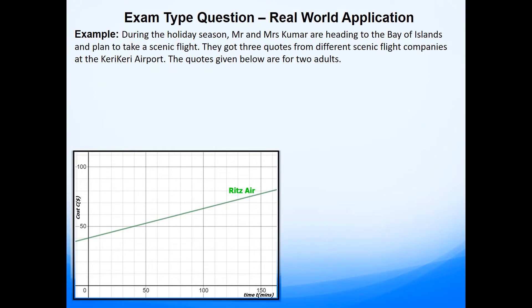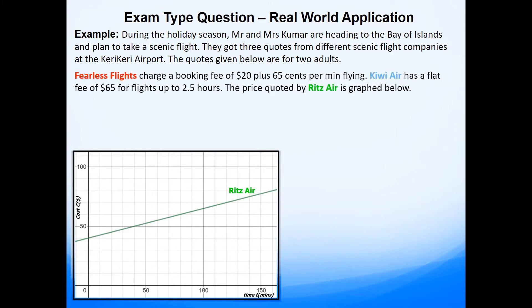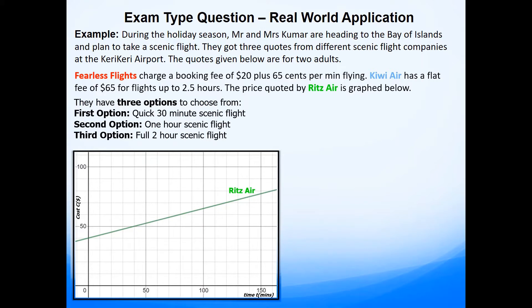So here's the problem that we have been looking at. During the holiday season Mr and Mrs Kumar are heading to the Bay of Islands and plan to take a scenic flight. They've got three quotes from different scenic flight companies at the Kerikeri Airport. The quotes given below are for two adults. Fearless Flights charges a booking fee of $20 plus 65 cents per minute flying. Kiwi Air has a flat fee of $65 for flights up to two and a half hours, and the price quoted by Ritz Air has been graphed below. They also have three options to choose from.